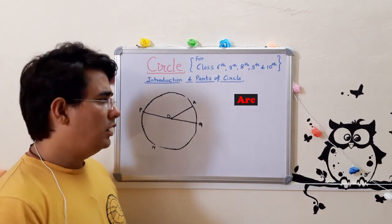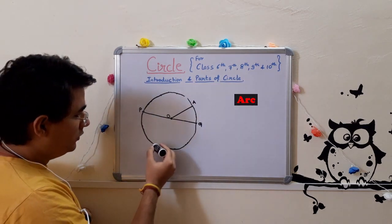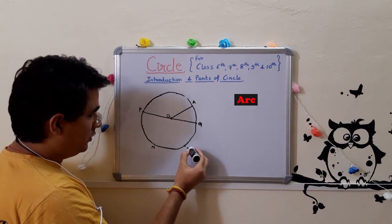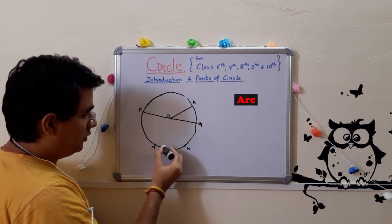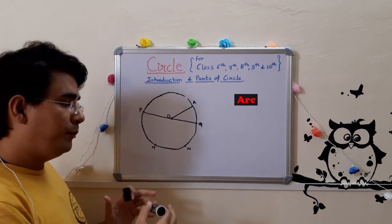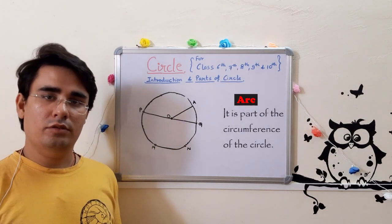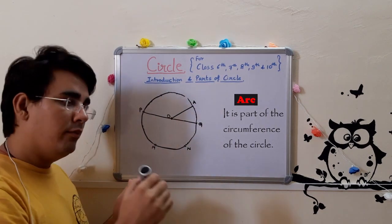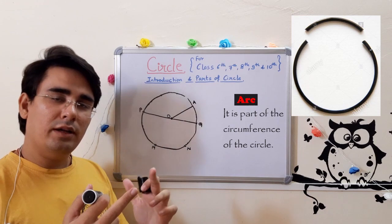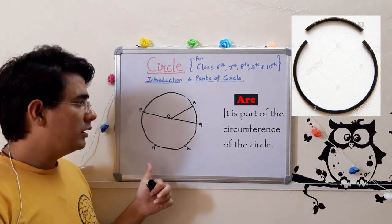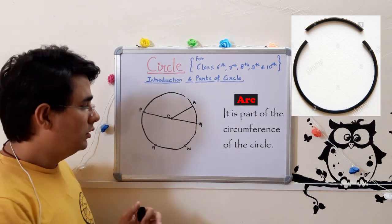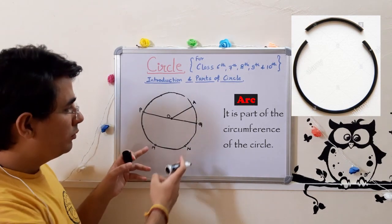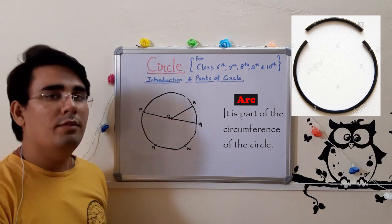Let's move on. Next, arc. So the arc is part of a circumference of the circle, which is a whole bangle. If I break the bangle, then the arc is part of the circle. So this small part is called minor arc, and the big part is called major arc.